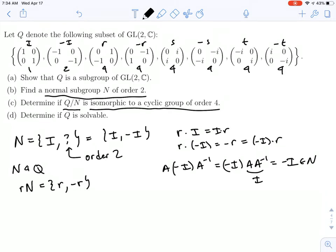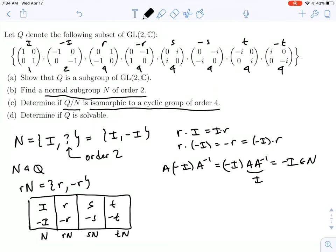So all these cosets are going to look like is one element in Q and then the negative of that element. So we could write it down like this. You have i and minus i, or R and minus R, S and minus S, T and minus T. So that's all the elements of Q, but we break them up into the cosets. This would just be N, this would be RN, SN, and TN. So those are our four elements in Q mod N.